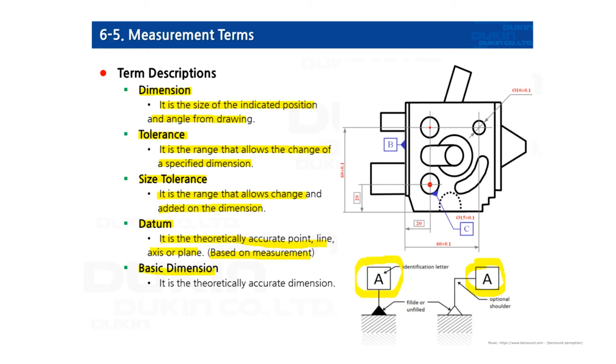And the basic dimension. It is the theoretically accurate dimension. You can see here, numbers are indicating in a box. This is basic dimension. And basic dimension does not have any allowable range, which is tolerance.